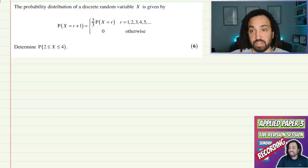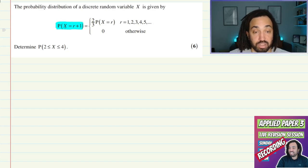Okay right, let's get into it. So this is like a recursive sequence because what we have here is the probability of x being equal to r plus 1 is related to the probability of x being r.